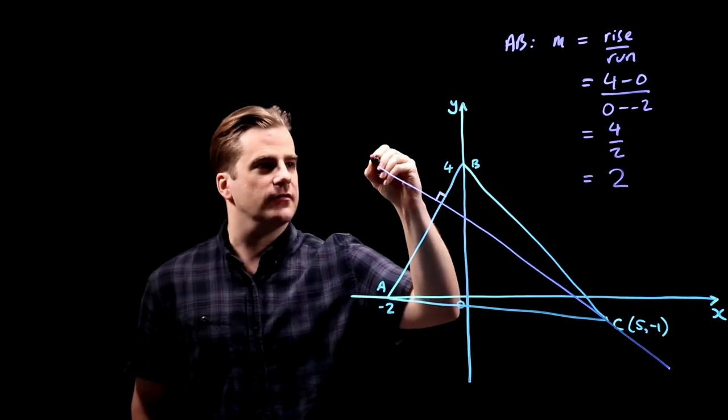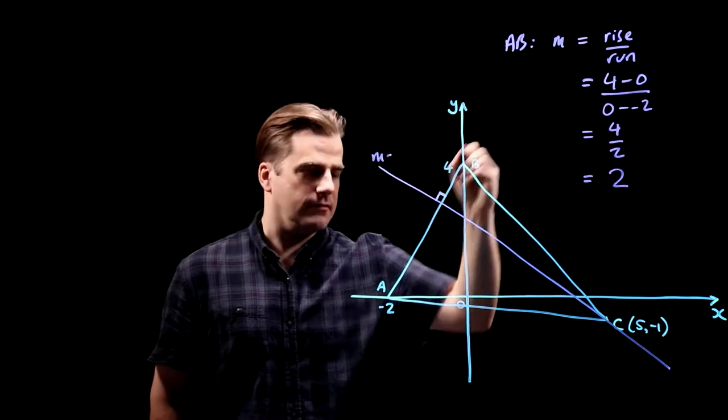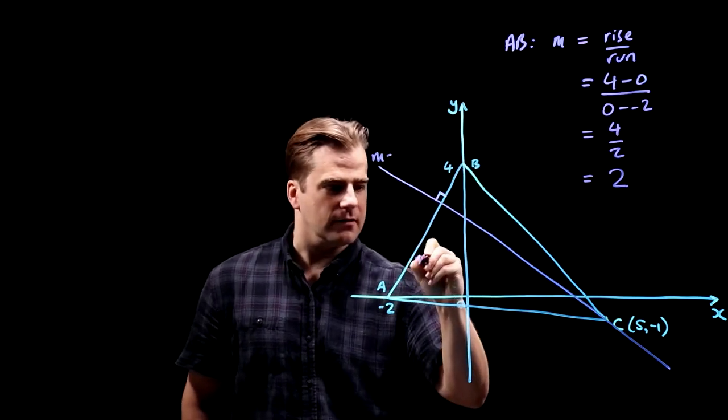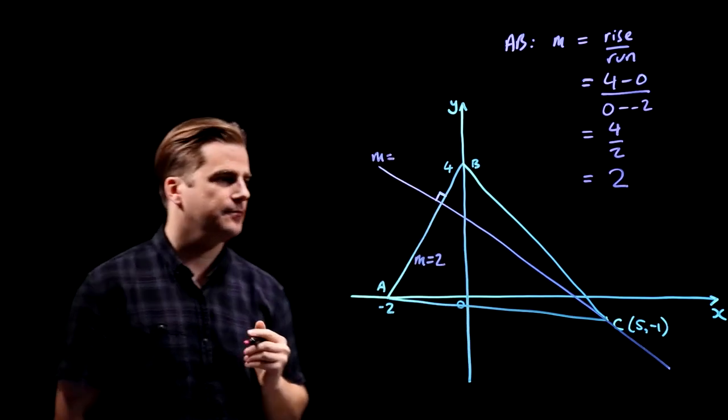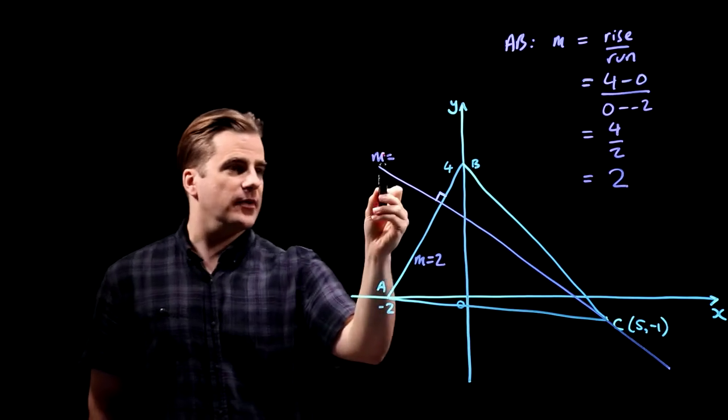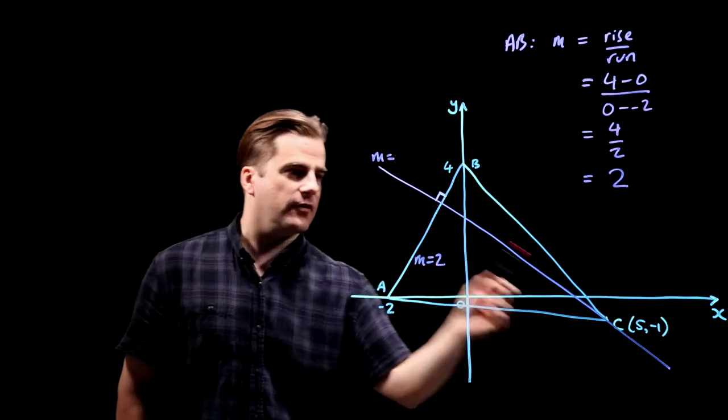So the gradient of this line is two. So now we can work out the M of our line.